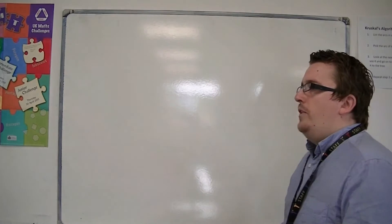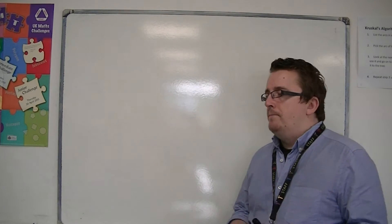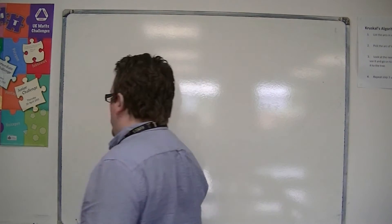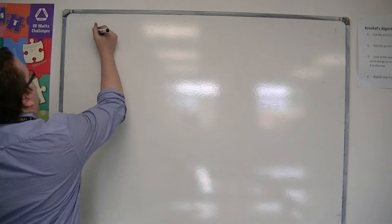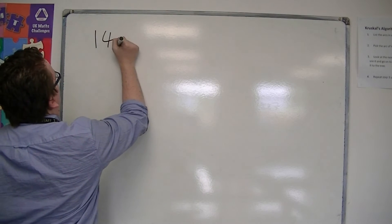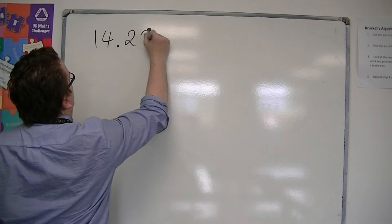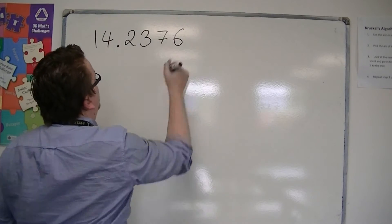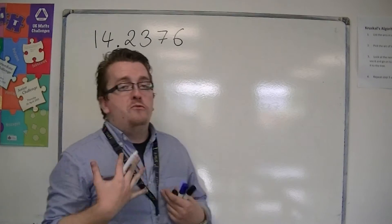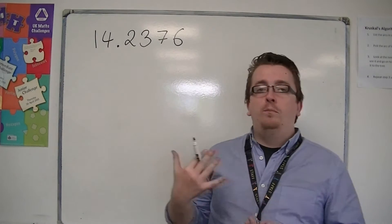And with decimal places, we're looking at numbers such as 14.2376, for example. So, numbers that have decimal places.